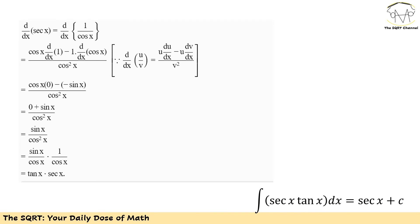Now let's focus on the second sub-problem: the integral of sin(x) over cosine squared of x, dx — equivalently, tan(x) over cosine of x, dx. To do this, let's find the derivative of 1 over cosine of x with respect to x. Applying the derivative rules gives us sin(x) over cosine squared of x, which is exactly what we wanted. Therefore, the integral of sin(x) over cosine squared of x, dx equals secant of x plus a constant C.